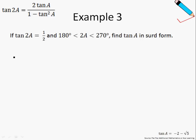Let's move on to example number 3, where we will make use of the tangent double angle formula. Given that tangent 2A is equal to 1/2, and that 2A is between 180 degrees to 270 degrees, find tangent A in surd form. We will first convert tangent 2A to the right-hand side of this formula. So we have 2 tangent A over 1 minus tangent squared A equals to 1/2. Take note that I'm actually making use of this formula over here.